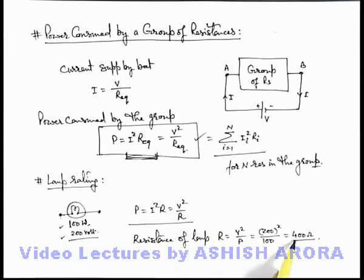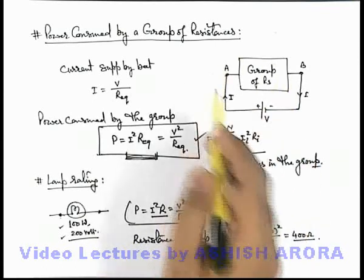So using this resistance whenever a current I flows through it, you can calculate its power as I squared R. Or both of these relations, I squared R or V squared by R, we can calculate for calculation of power consumption of individual resistance or even for a group of resistance.